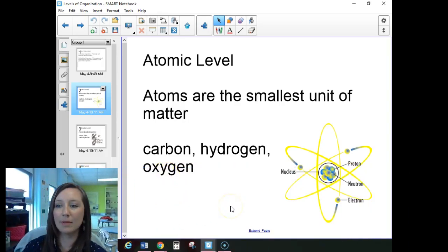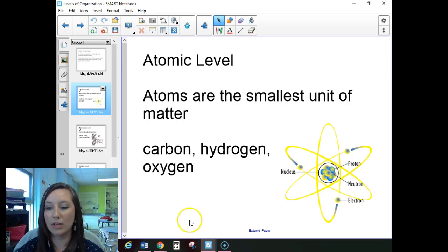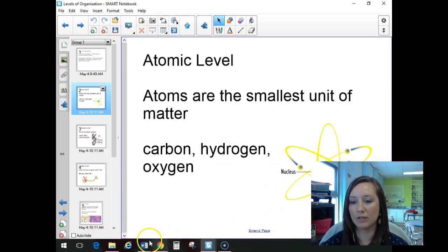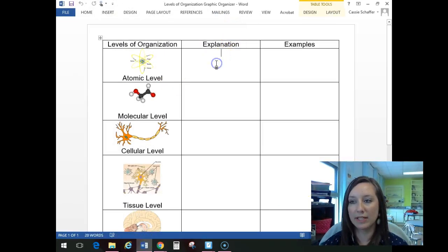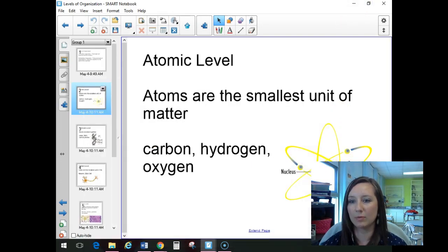Our atomic level is made up of atoms. It's the smallest unit of matter. So we have carbon, hydrogen, oxygen, a whole bunch of different types of atoms. In your graphic organizer then, you would type your explanation there and then give the examples. I'm not going to go back and forth between each one, but you kind of start to get the gist of how this works.